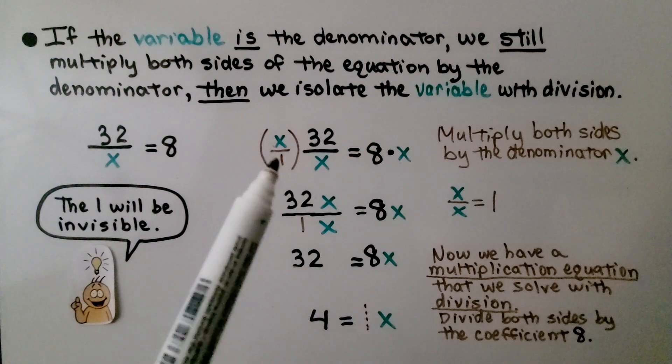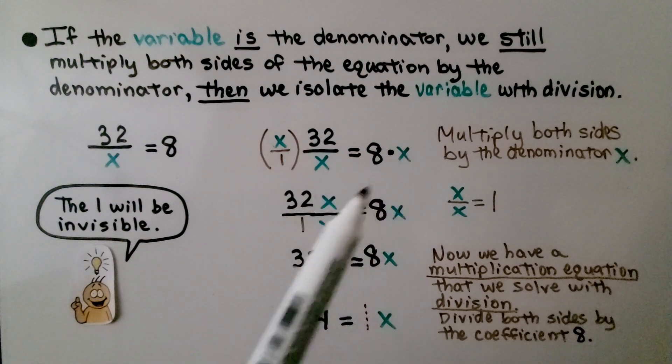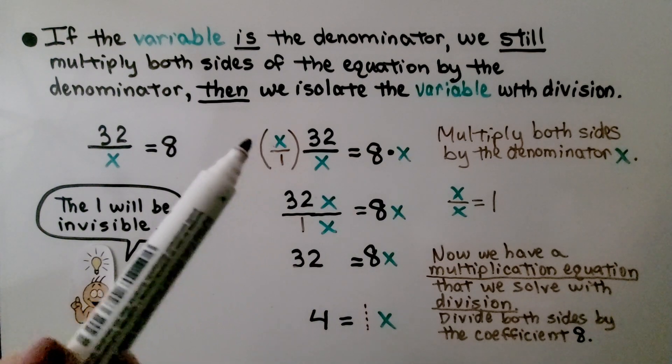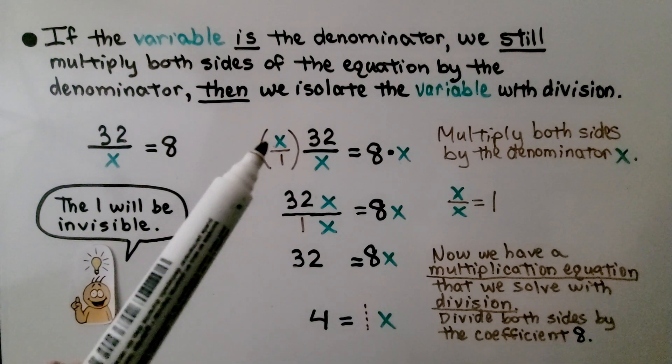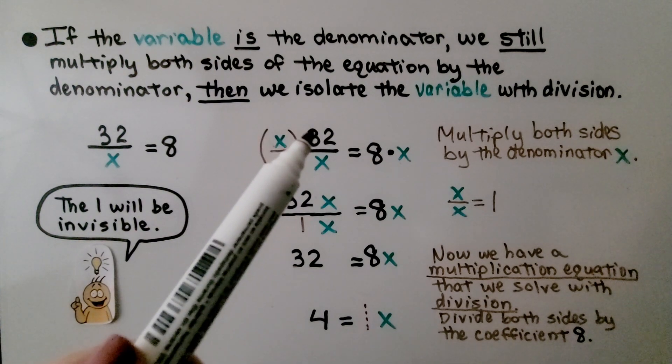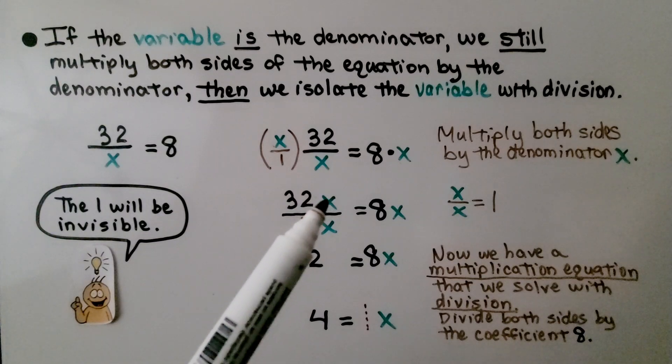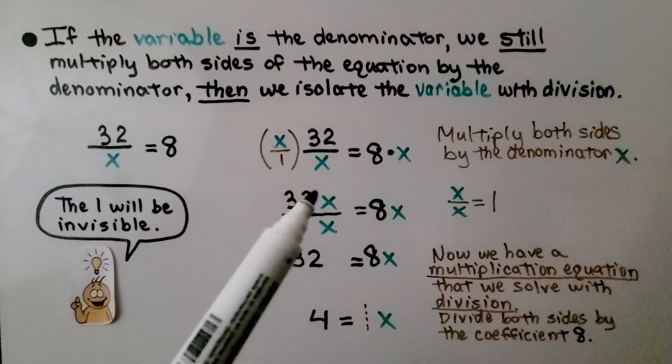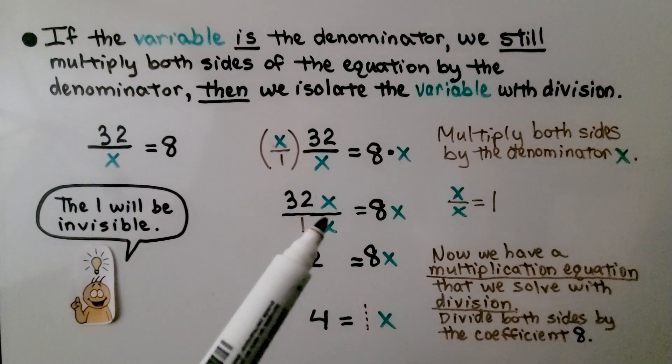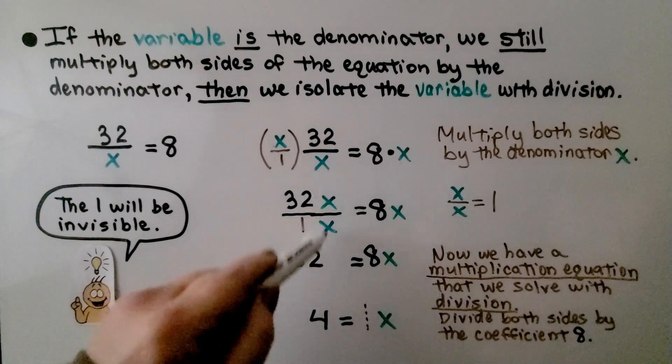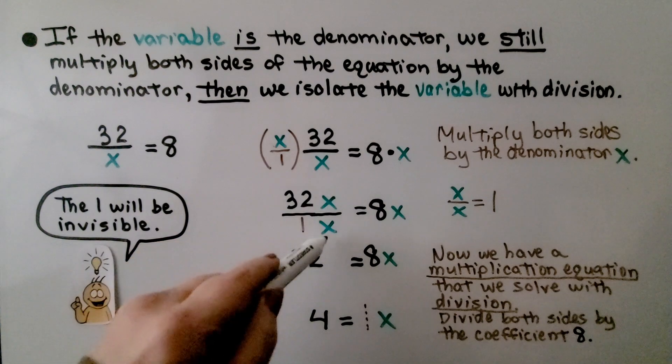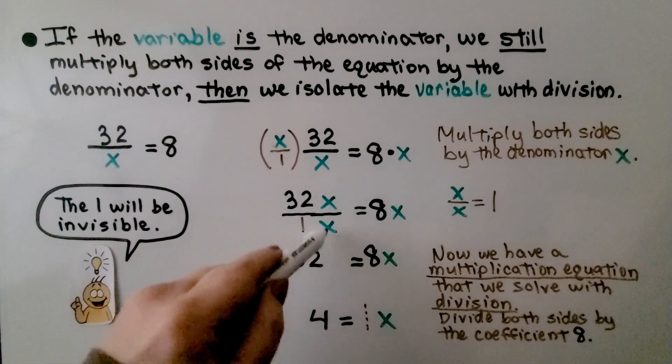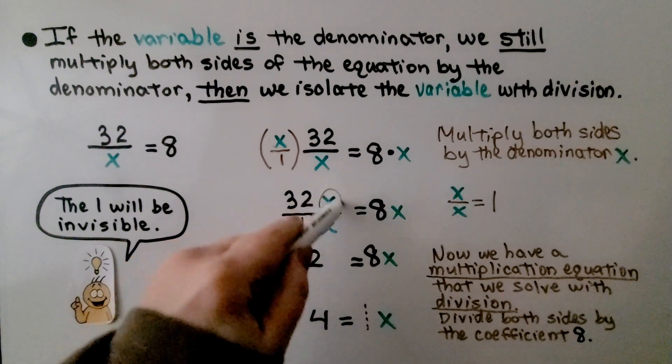We multiply both sides of the equation by x. We can write x over 1 to make it easier to multiply straight across. And here we have x times 32. We know the variable goes to the right and the coefficient is on the left. So we write 32x. And that's over 1x. We see x over x. Doesn't matter what the value of x is. It's going to be the same value. We know that's a 1.